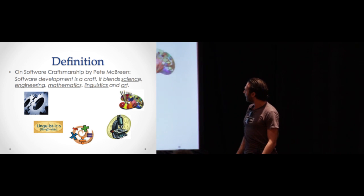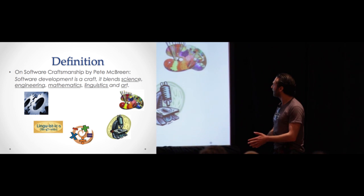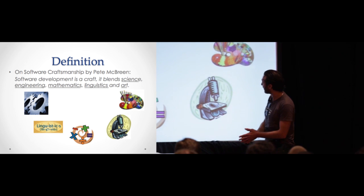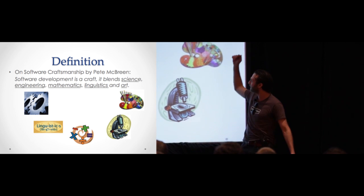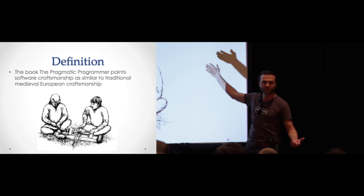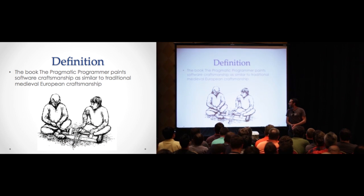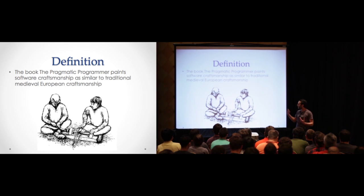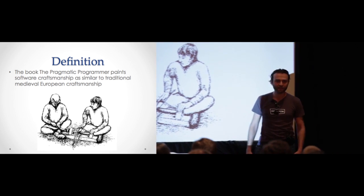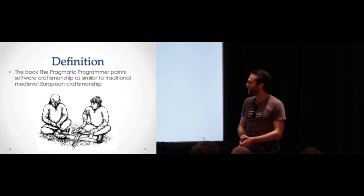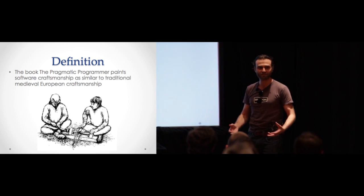However, software craftsmanship came out after a while, and Pete McBreen basically said that software development is a craft. It's not just engineering. It's actually science, mathematics, linguistics, and art. Also, the pragmatic programmer compares it to traditional European craftsmanship, like building bows and stuff like that. And yeah, crystal balls and wizards, magicians.